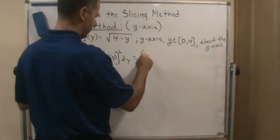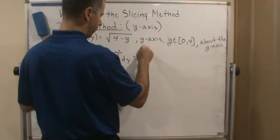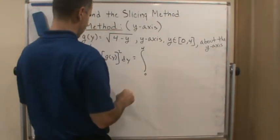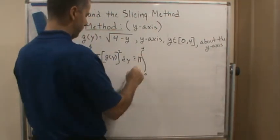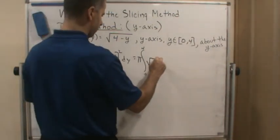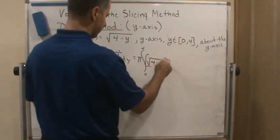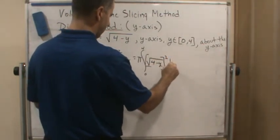So the interval goes from 0 to 4. So c is 0 and 4 is d. And then I'm going to pull the pi out because it's a constant. And g is the square root of 4 minus y. And we're going to square that and then dy.